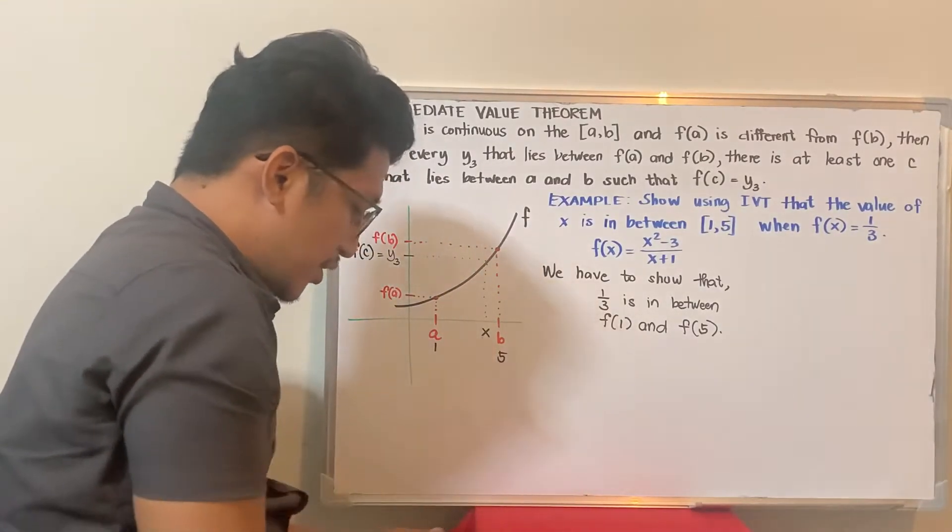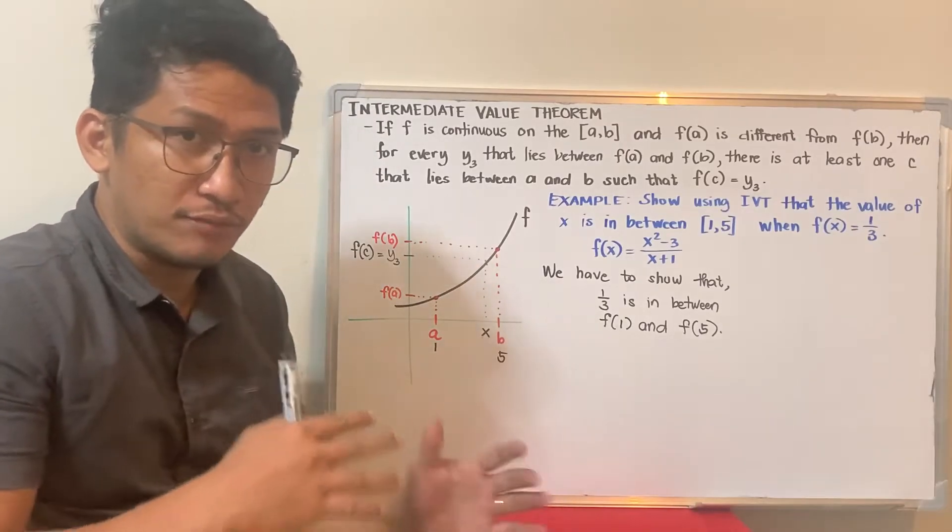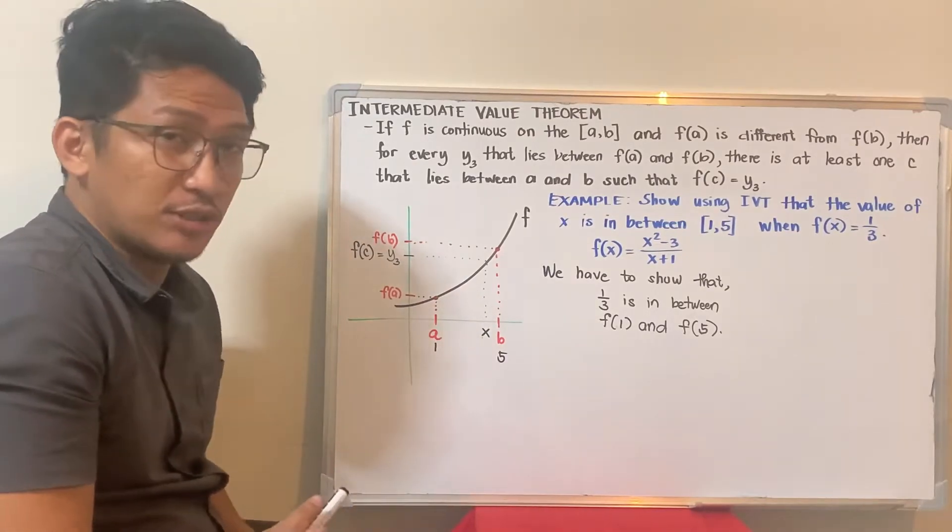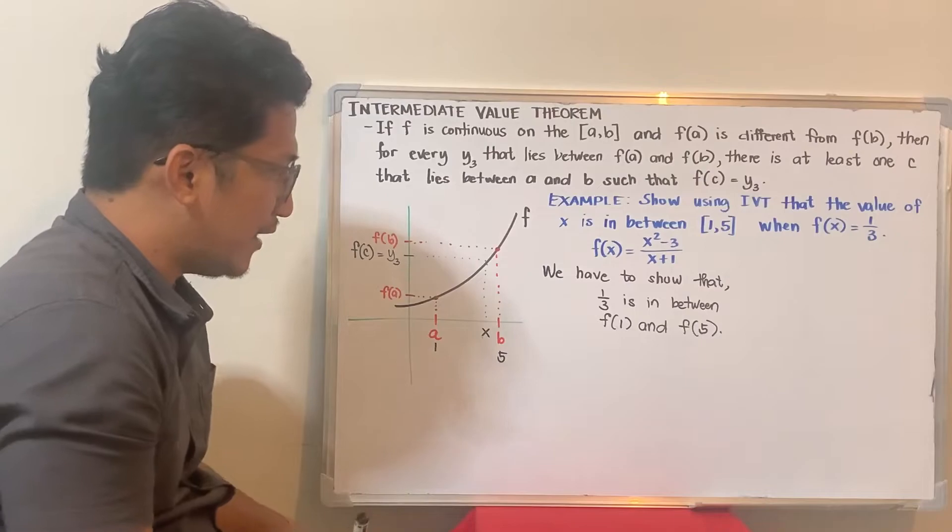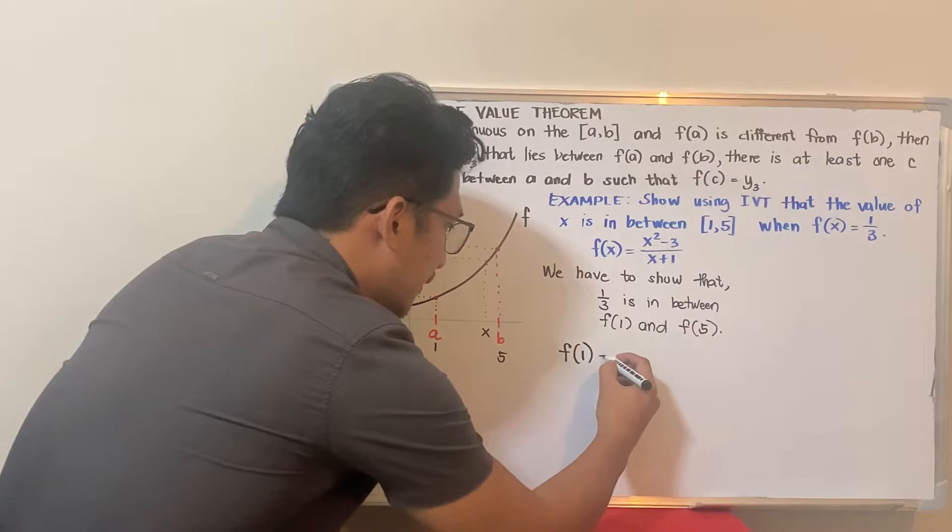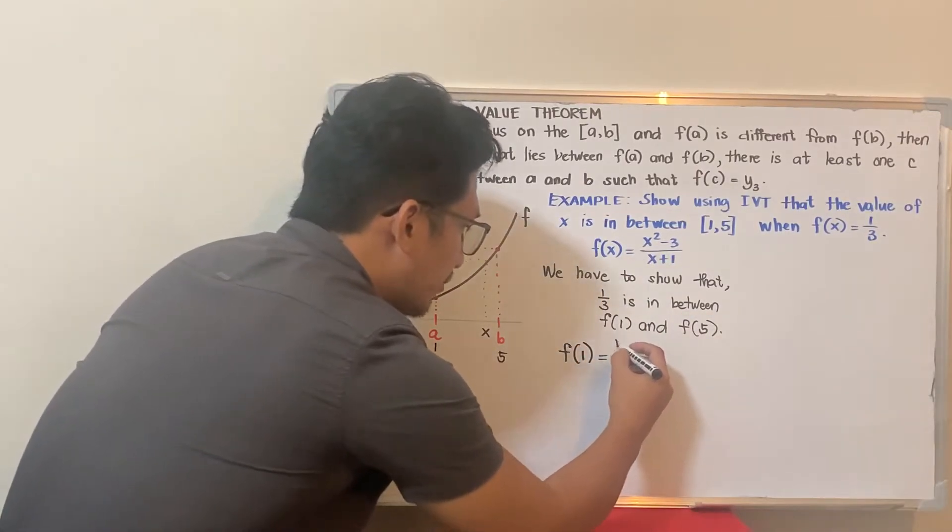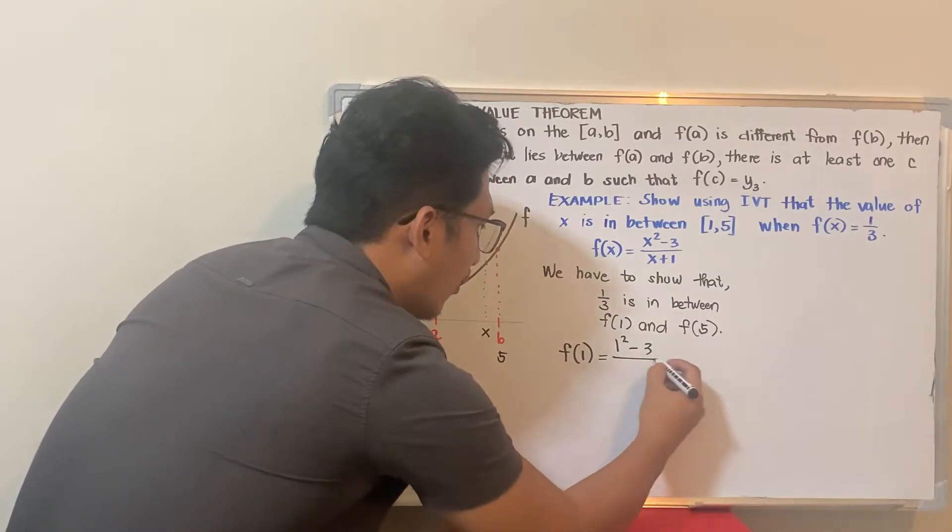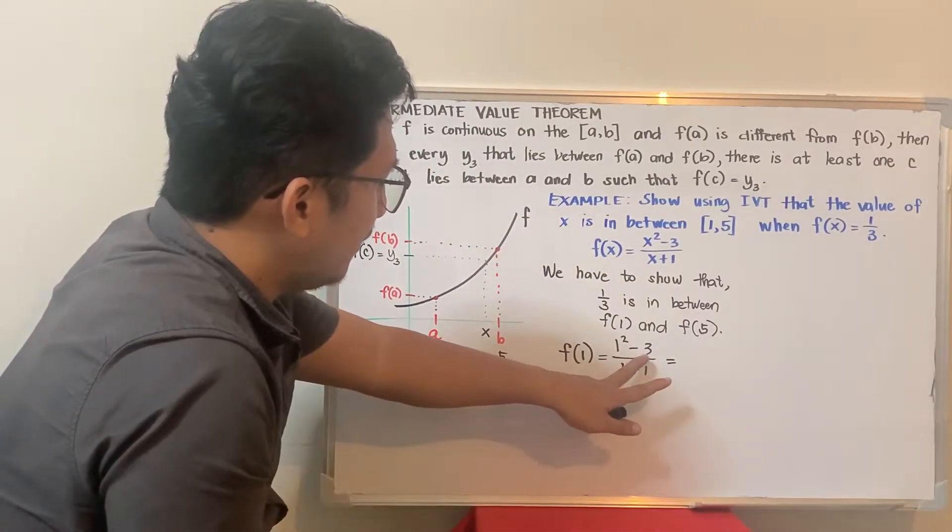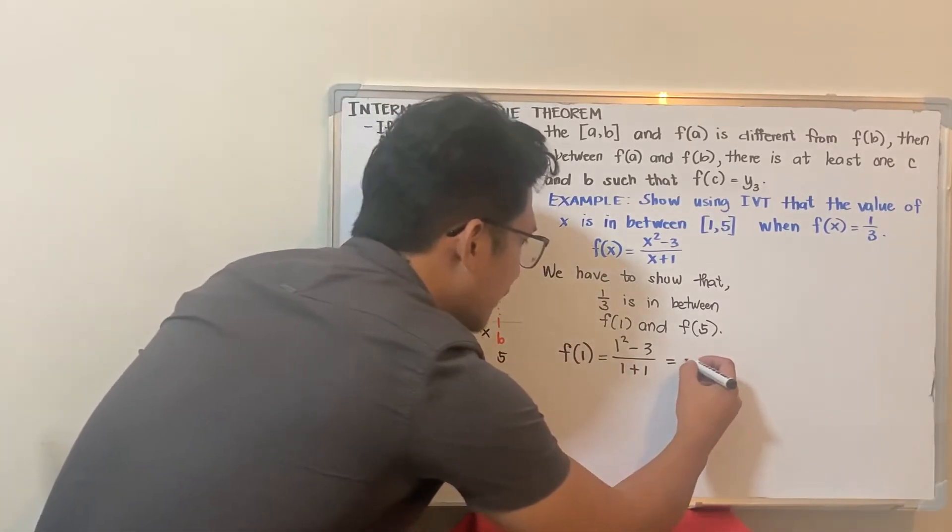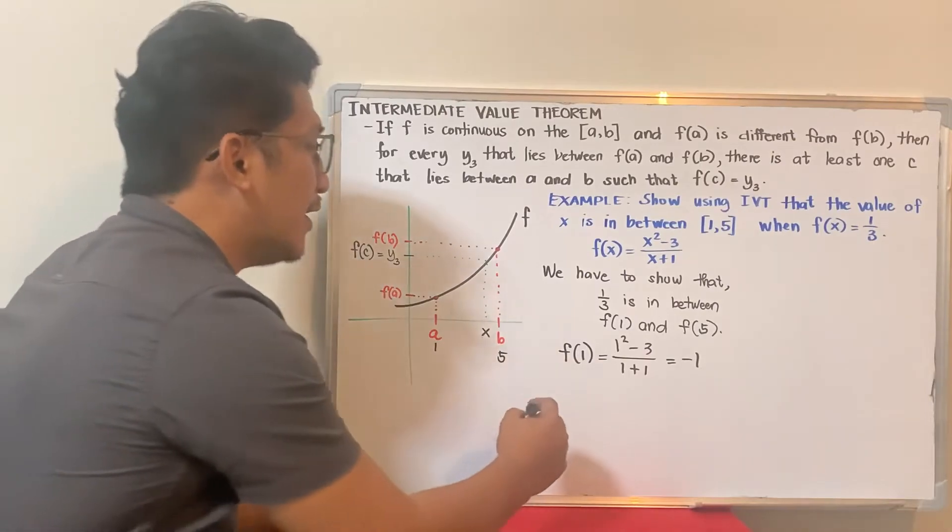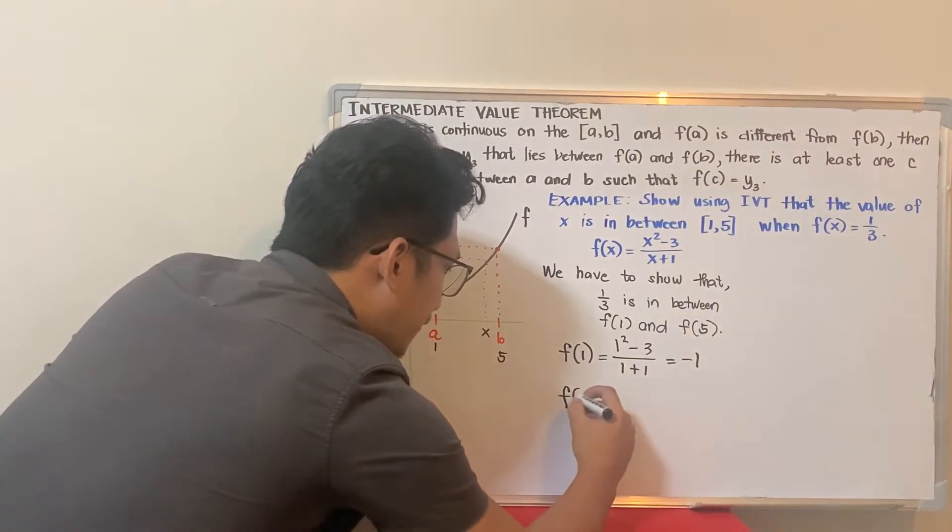Let's solve for F of 1. F of 1 should be equal to 1 squared minus 3 all over 1 plus 1, which means you have 1 minus 3 is negative 2 all over 2 is negative 1.